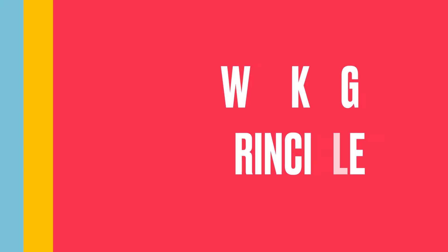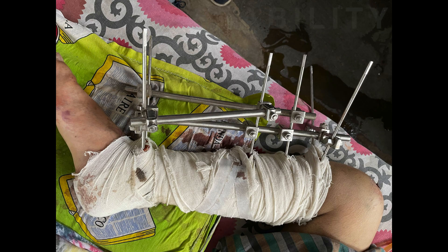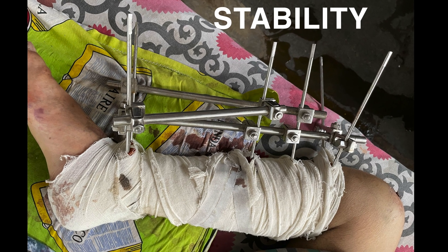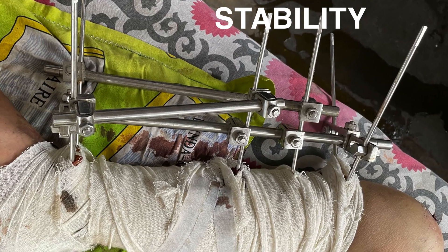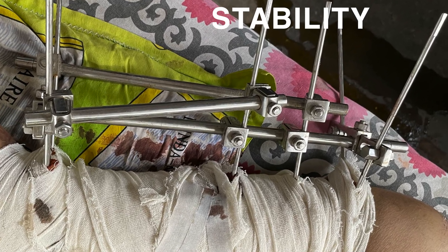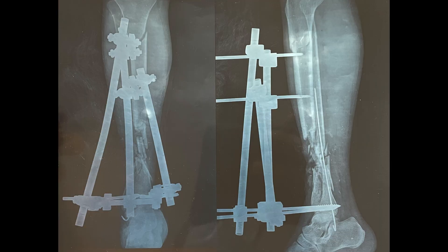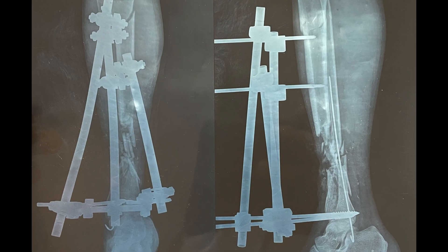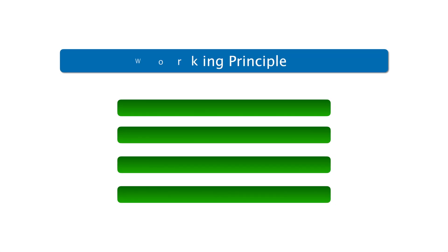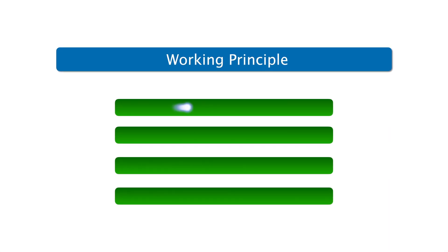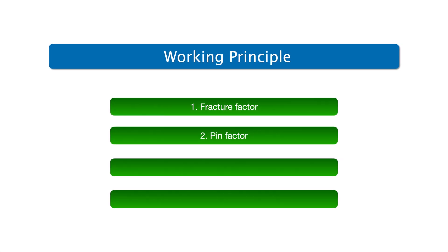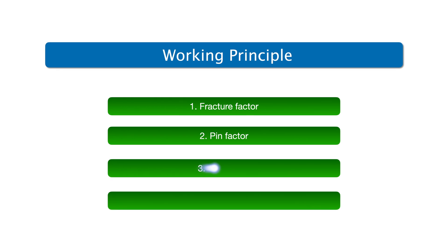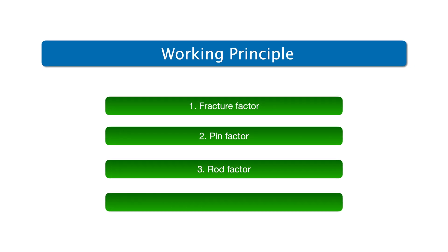Now come to the working principle. The main principle of the fixator is to provide stability to an injured bone so that it can heal well. Working principle mainly occurs by four factors: fracture factor, pin factor, rod factor, and ring factor.